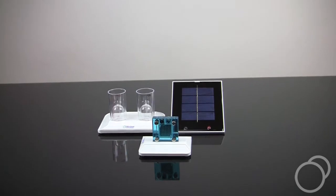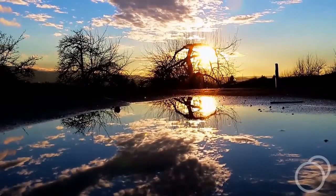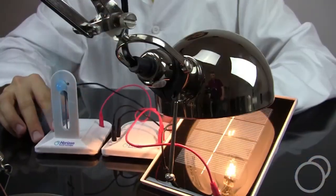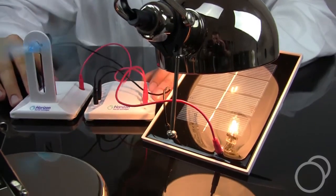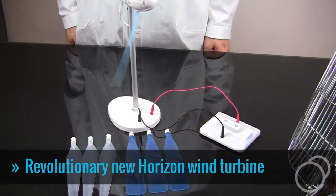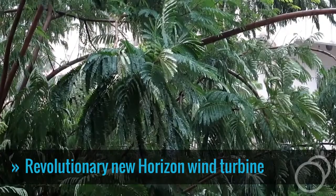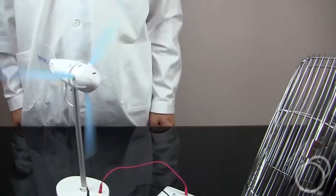The solar cell converts light from the sun or a normal desk lamp if it's cloudy into electricity. The wind turbine generates electricity using the wind outside or the power of a desktop fan.